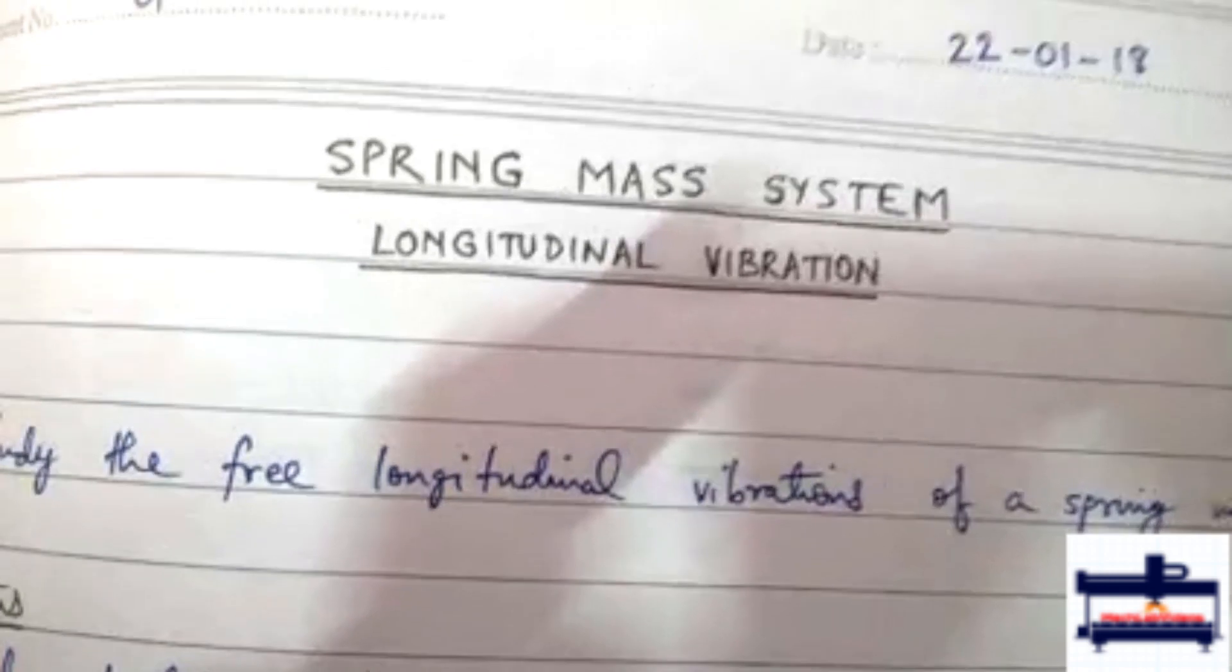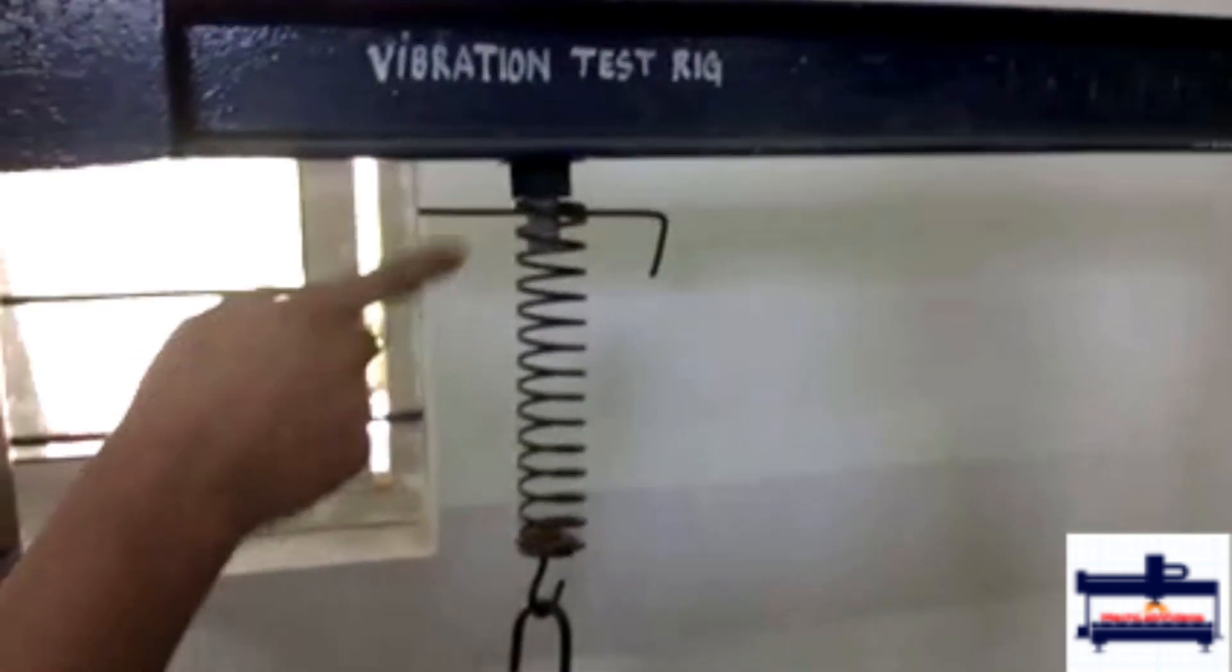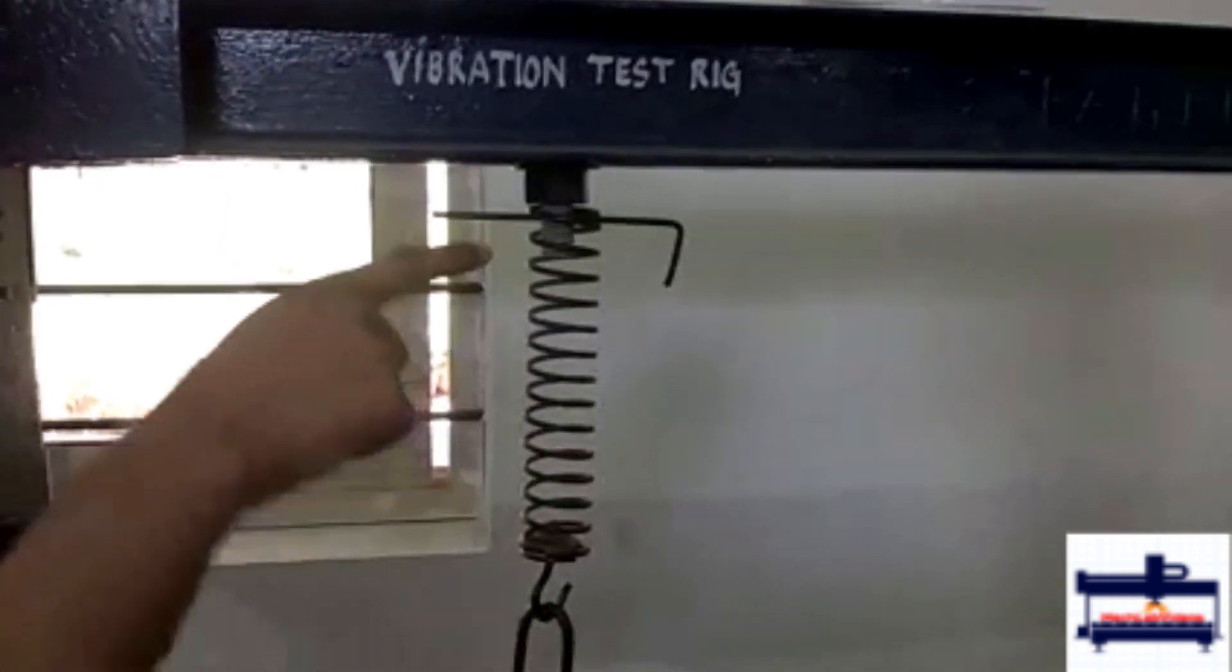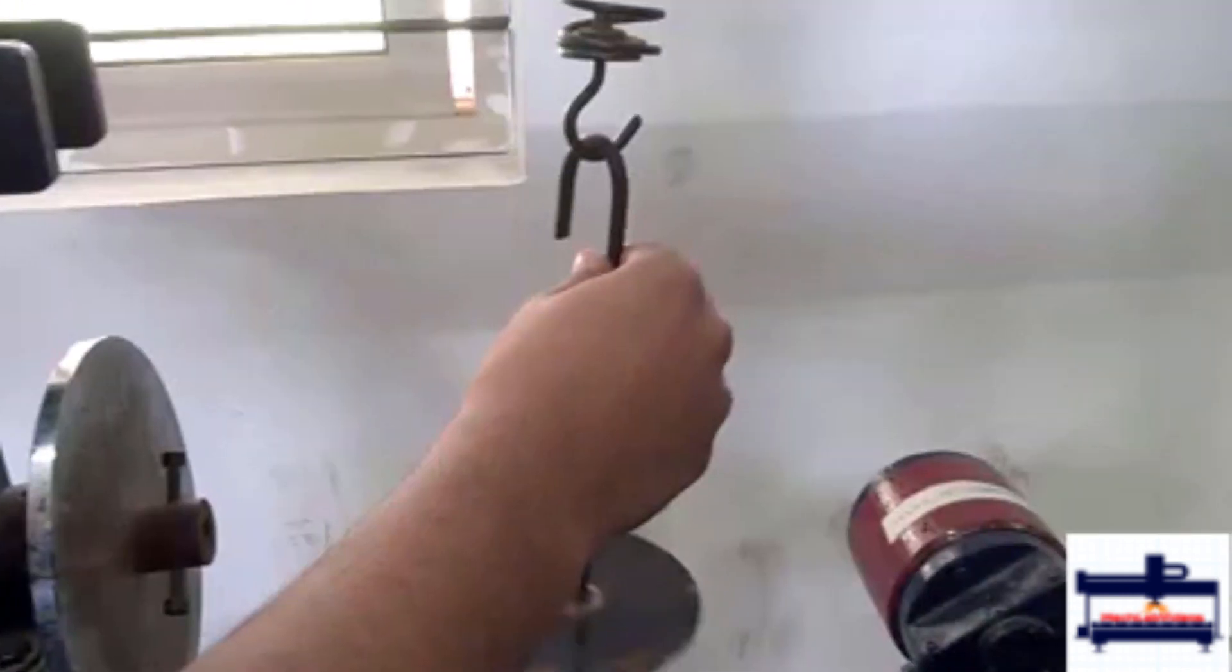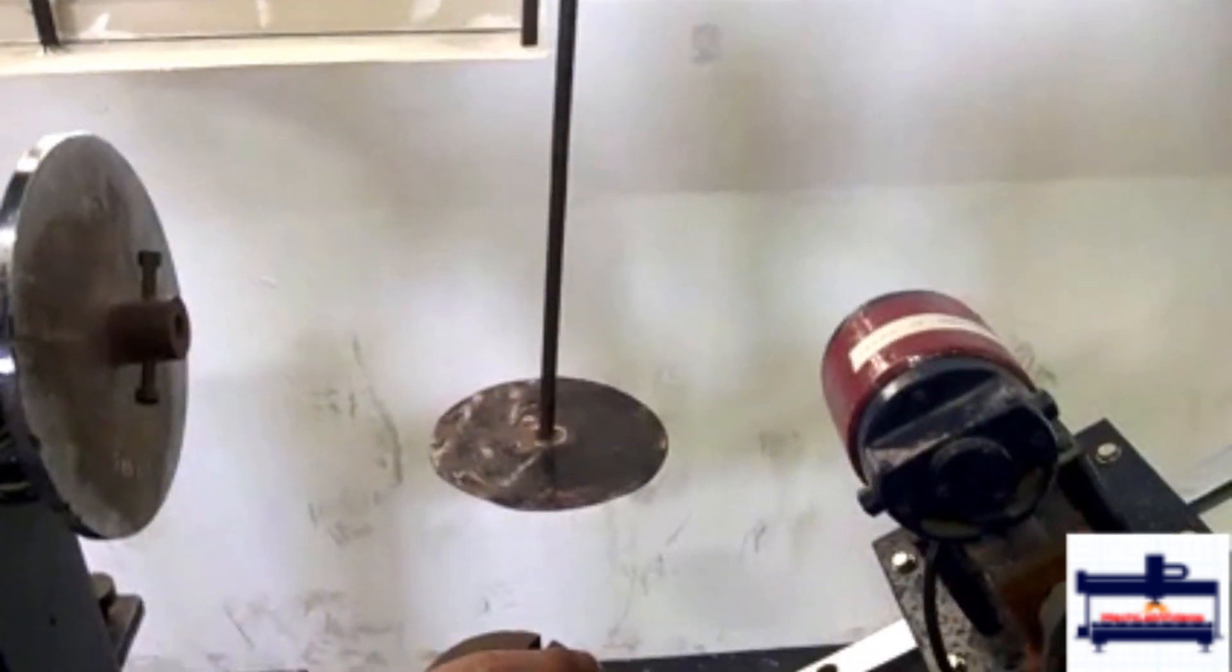This experiment is a spring-mass system for longitudinal vibration. First, we measure the initial length of the spring, which is from this point where the link is there until the base of the spring. This length comes up to 18.8 centimeters. After this, we put the hanger and add some load.